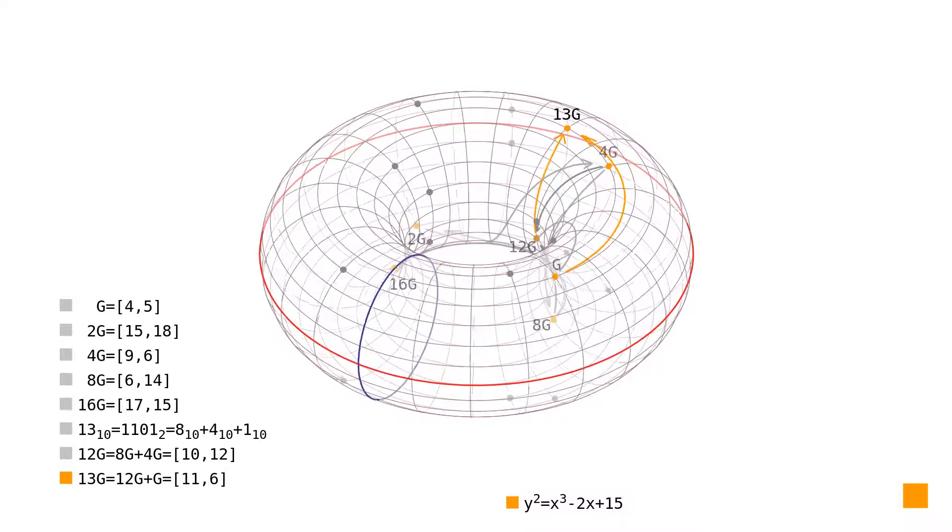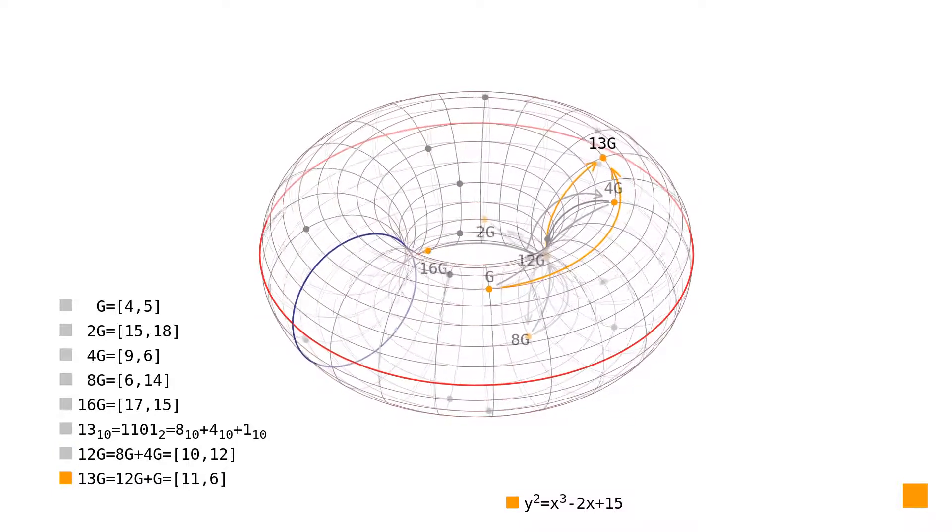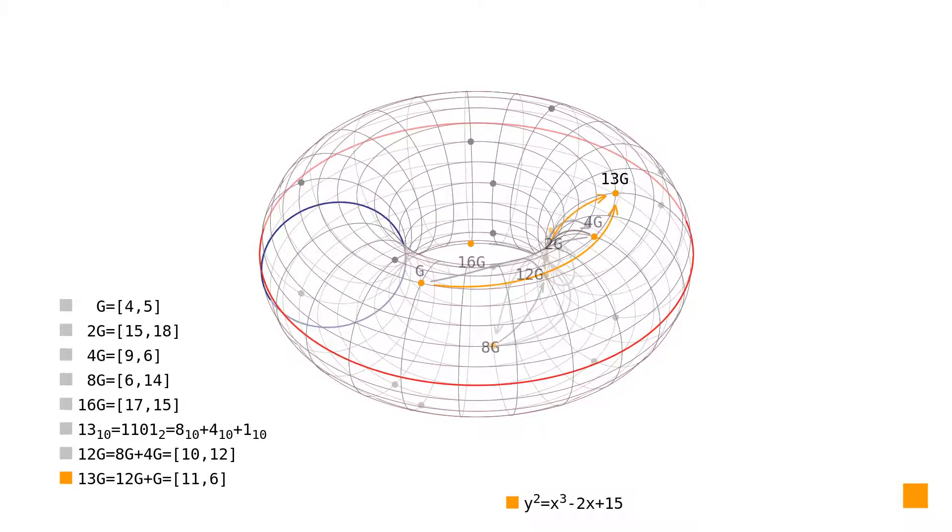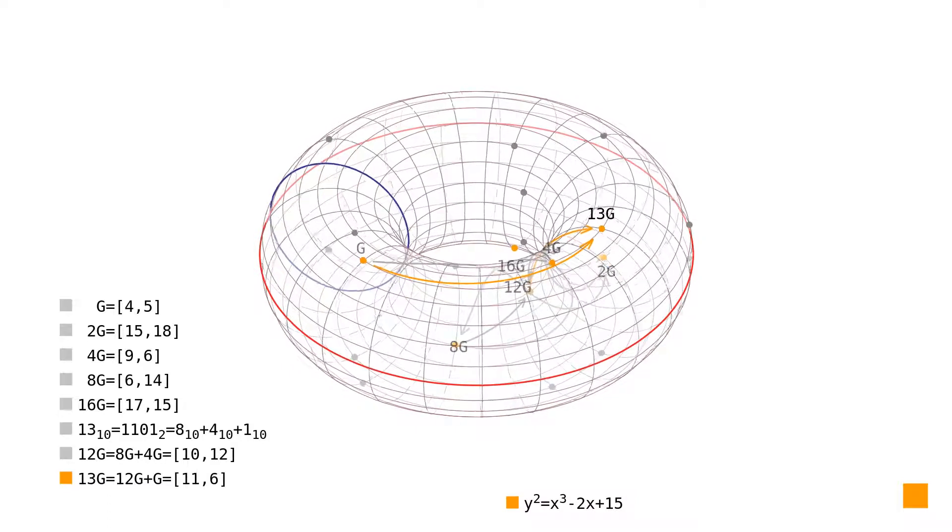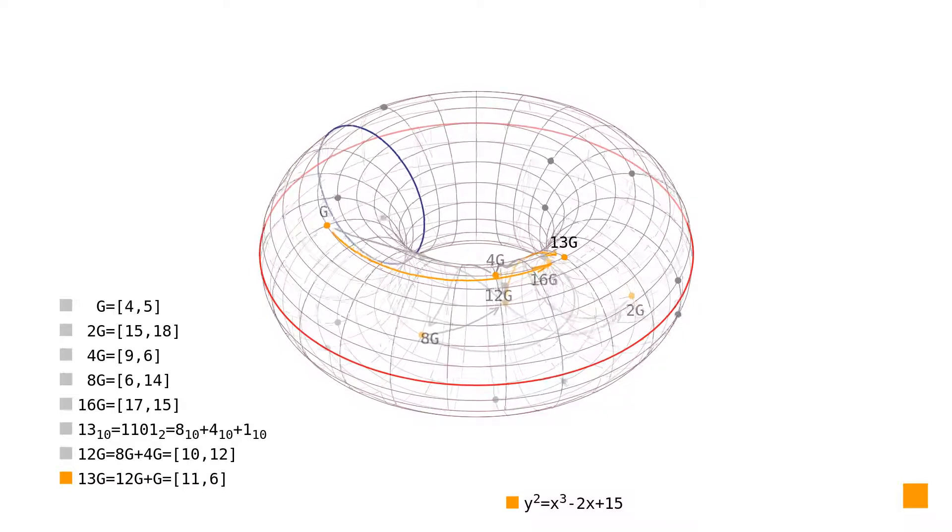We see that only three doublings and two additions were needed to find the point 13G. That is less than half of the operations used by the naive method.